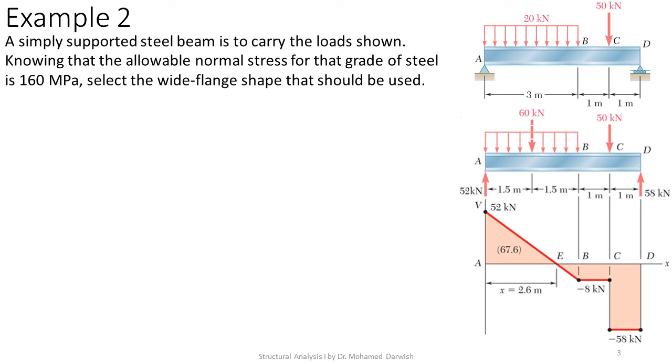Simply we could know that the maximum bending moment is at point E, which is from similarity of triangles. We could calculate it to be at a distance of 2.6 meters from A. So the area of this triangle is simply 52 times 2.6 over 2, this is 67.6 kilonewton meters.